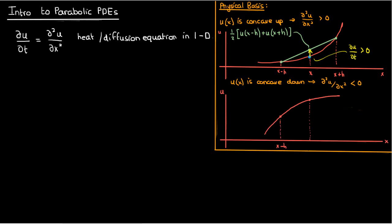Again, if I have three adjacent points at x minus h, x, and x plus h, then because the function is concave down now, the average value of u between the surrounding points x minus h and x plus h is now less than the average value of u at x.